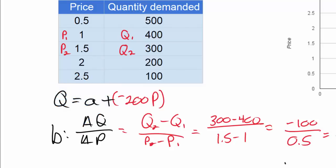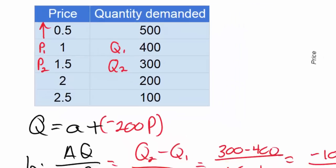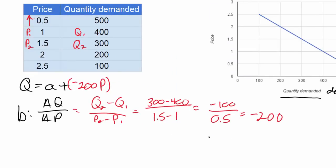Now how do we find the a variable? We define the a variable as the Q-intercept of demand. It would be the quantity demanded at a price of 0, but we don't have a price of 0 here. Our price only goes down to 0.5. But what we do have is everything in our equation except the a variable. So all I need to do now to find the a variable is to plug in a Q and a P from my schedule to the equation that we already have.